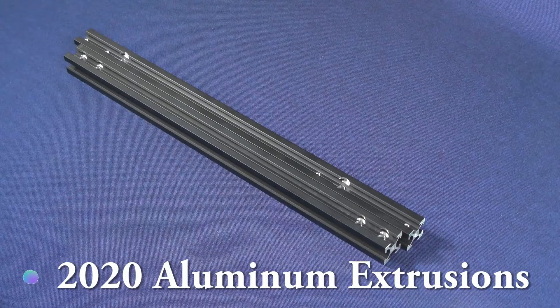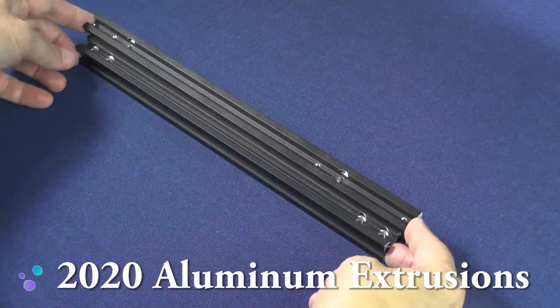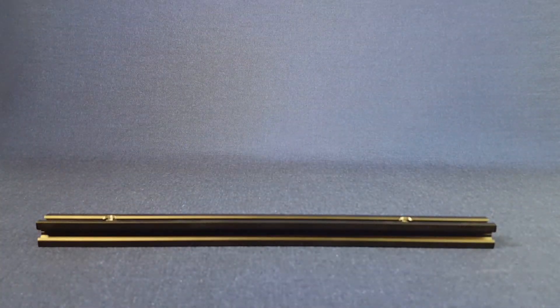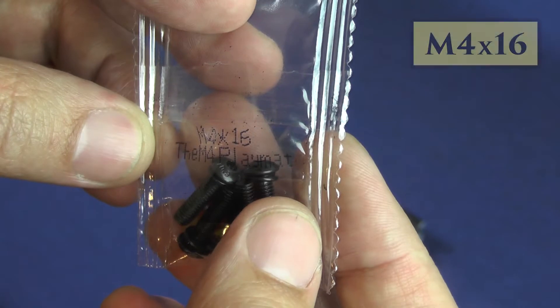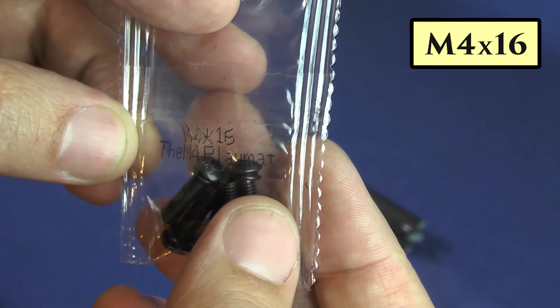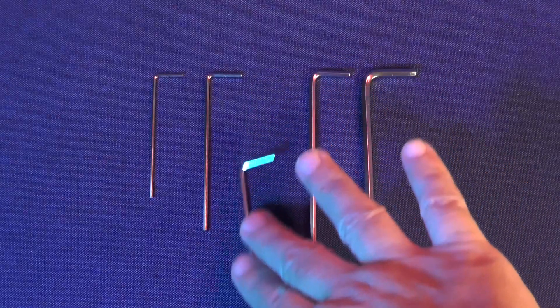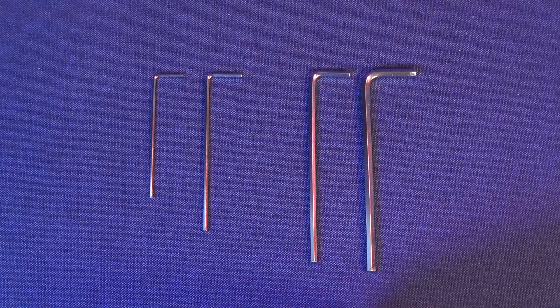Now, you should compare the size of the two 2020 aluminum extrusion. Put aside the smaller one for the moment. For this, we will need two M4-16 screws. You also need to pick up the mid-size hex wrench from the ones that came with the printer.